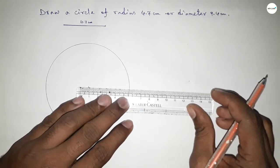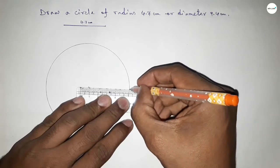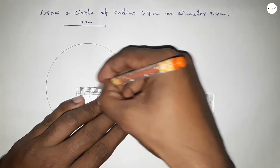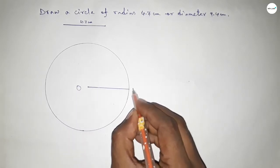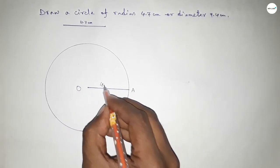Now joining this one. Okay, so this is center O and here A. So radius OA equal to 4.7 centimeter.